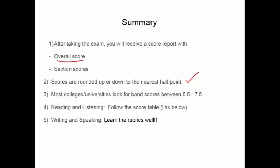Reading and listening follow score tables — links are below where you can see those scoring tables. For example, 30 out of 40 will be a band score of 6 on general training. For writing and speaking, you need to learn the rubrics well so you know what you need to do for the band score you're trying to achieve.